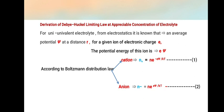According to Boltzmann distribution law, for cations, N+ = N·e^(-eψ/kT).